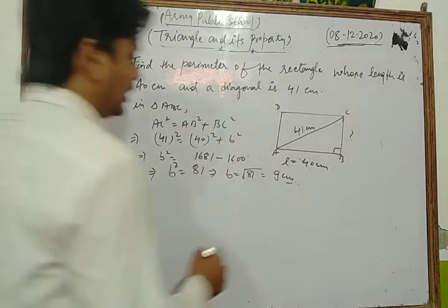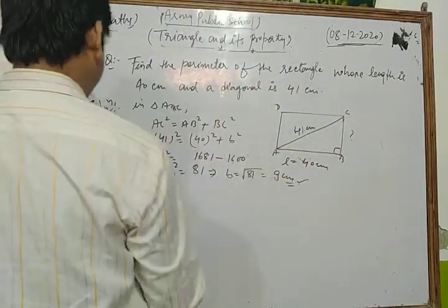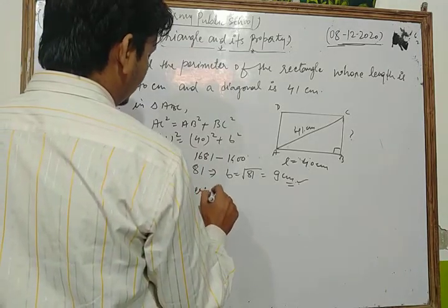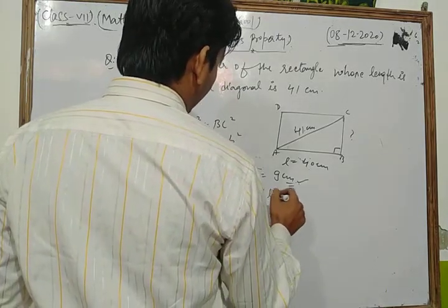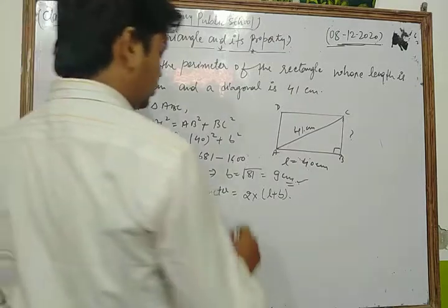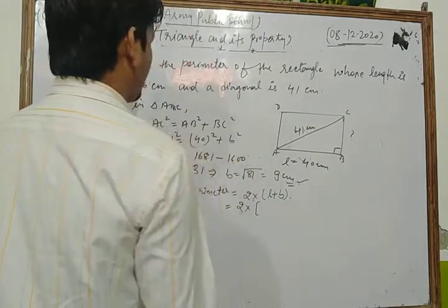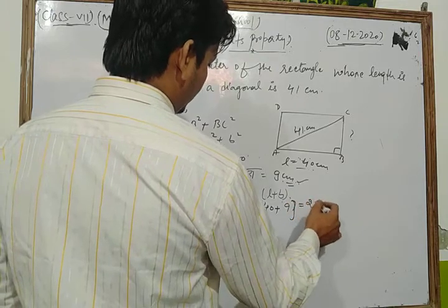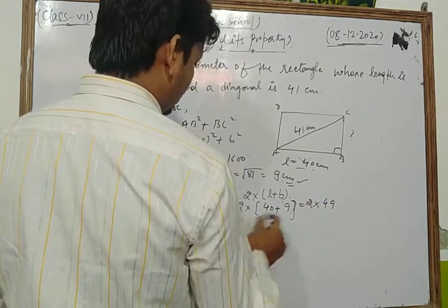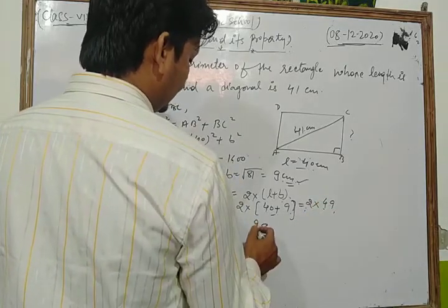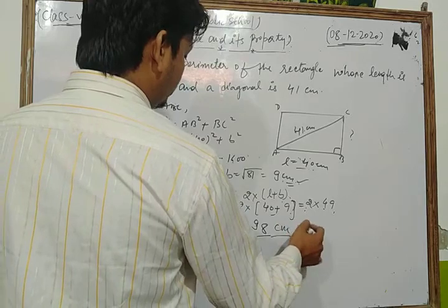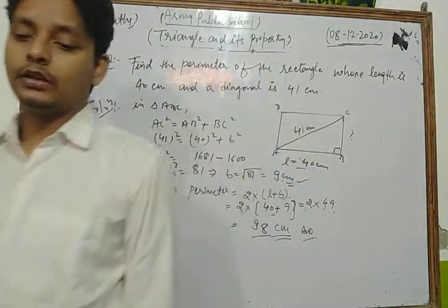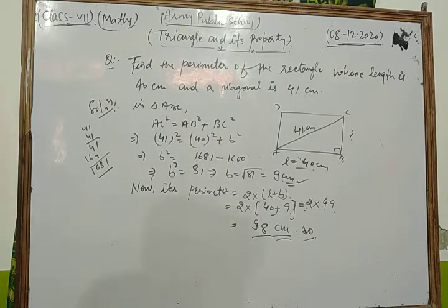The breadth of the rectangle is 9 centimeters. Now the perimeter equals 2 times (length plus breadth) equals 2 times (40 plus 9) equals 2 times 49 equals 98 centimeters. Remember that perimeter is always in centimeters and area is always in square units.